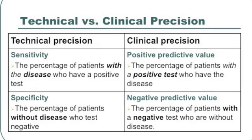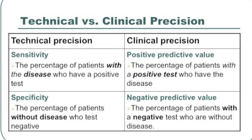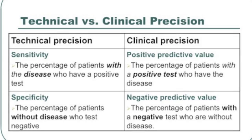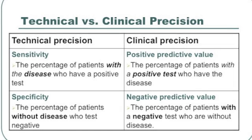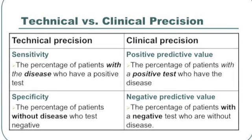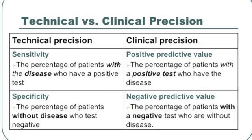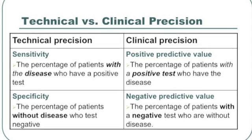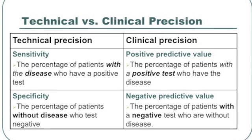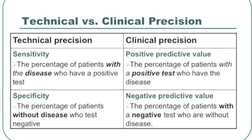Sensitivity and specificity can be thought of as the technical precision of a test — it tells us how well the test works in laboratory conditions. The sensitivity tells us the percentage of patients with the disease who are going to have a positive test. Specificity tells us the number of patients without a disease for whom the test is going to be negative.